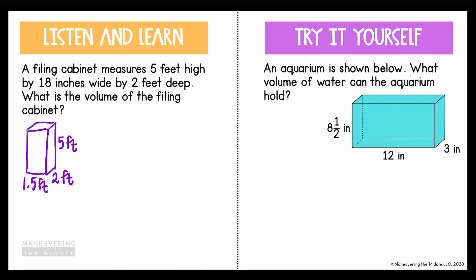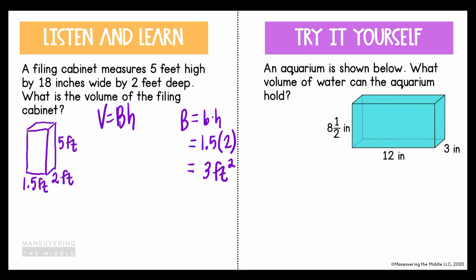So now, going back to my original formula: volume equals area of the base times the height. I'm going to find the area of the base first, which is base times height. That gives me 1½ times 2, and then I multiply by the height of my filing cabinet, which is 5. So the volume of the filing cabinet is 15 feet cubed.